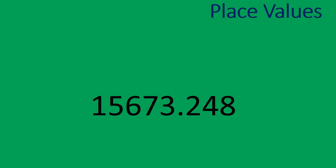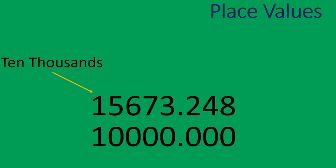Place values. Here is a number: 15,673.248. We're going to use that number to talk about place values. Moving from left to right, my place value here — the one — is in the 10,000s column. That's the place value, so that represents one 10,000. A quick way to remember that is to write that number and fill everything out with zeros. That'll tell you exactly what it is: 10,000. That's the location — the place value is the 10,000s column.